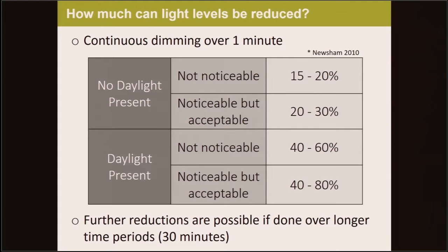Lab and field studies have shown that significant reductions can be made to light levels and the corresponding electric power demand. If daylight is not present, light levels can be reduced by 15 to 20% from recommended levels without occupants even noticing, and between 20 and 30% was considered tolerable. If daylight is present, the reduction can be even greater — up to 40 to 60% without occupants noticing, and up to 80% was tolerable. Note that these are with respect to recommended light levels, so if levels are actually higher, even more dimming is possible. This assumes dimming occurs continuously over some short period of time, for example one minute. If dimming happens instantaneously or stepped, the reduction is much more noticeable and that's not recommended. Also, if the dimming took place over a long period of time, up to 30 minutes, like in a demand-response scenario, then further reductions were obtainable.